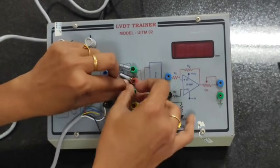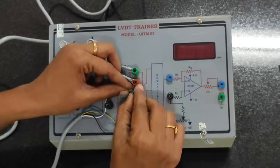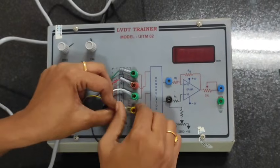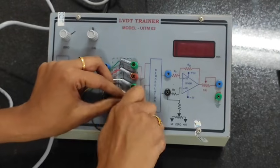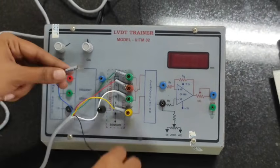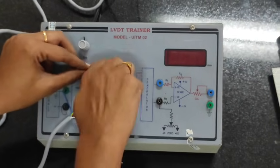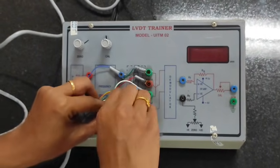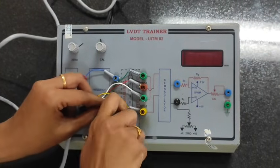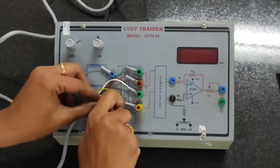Next, we are giving connection to the second secondary coil. We need to give supply for the primary coil also. Now we are giving connection to the primary coil. Now the LVDT trainer kit is interfaced with the core displacement.